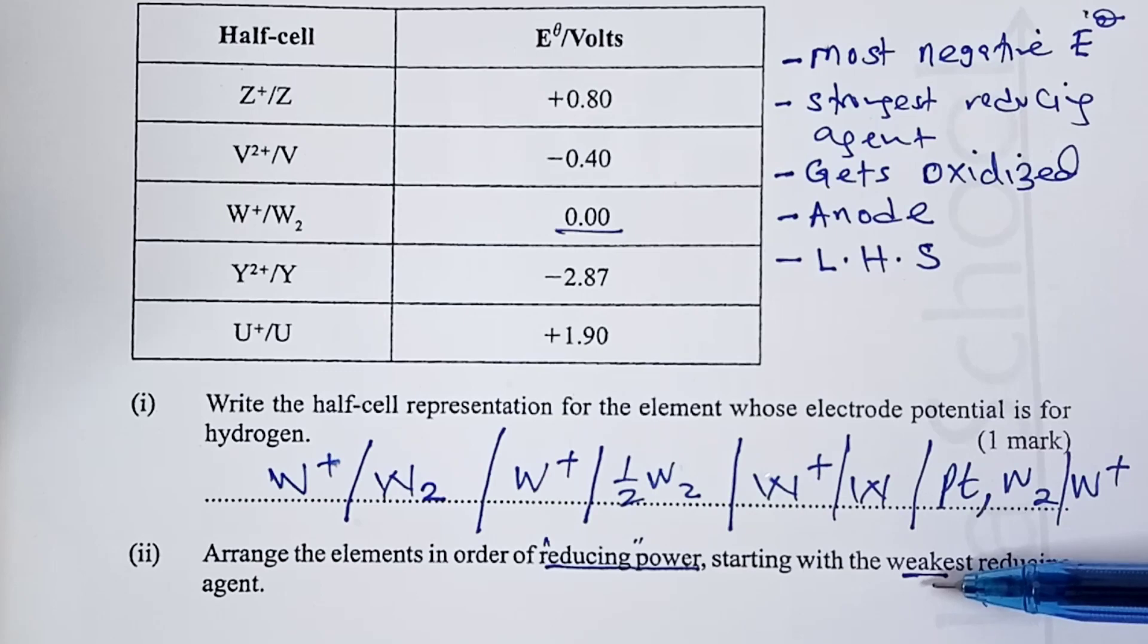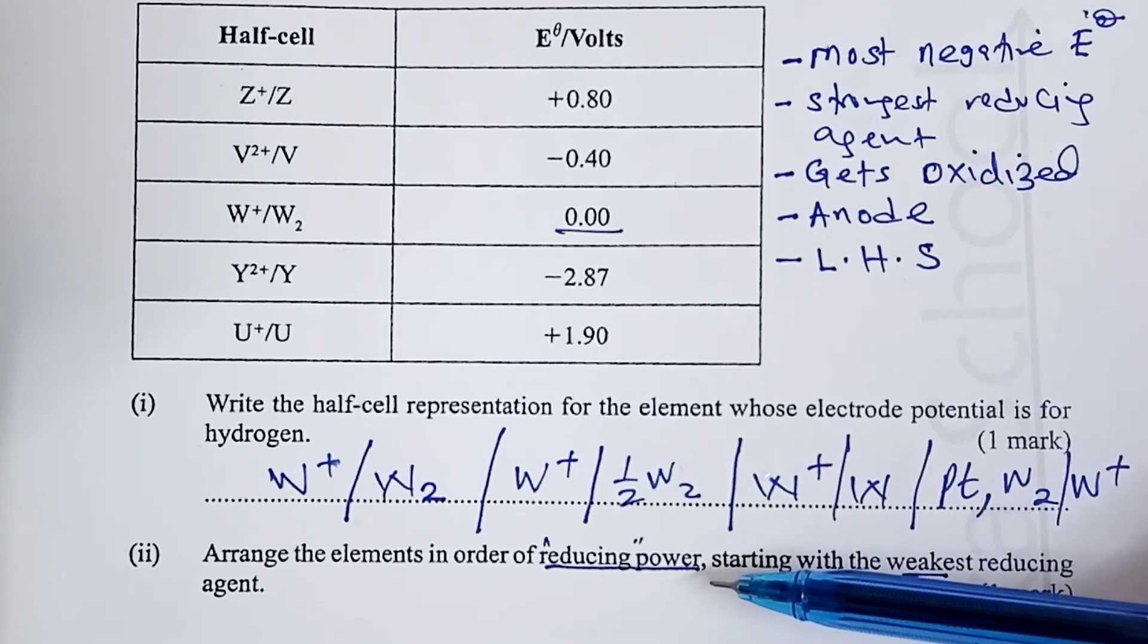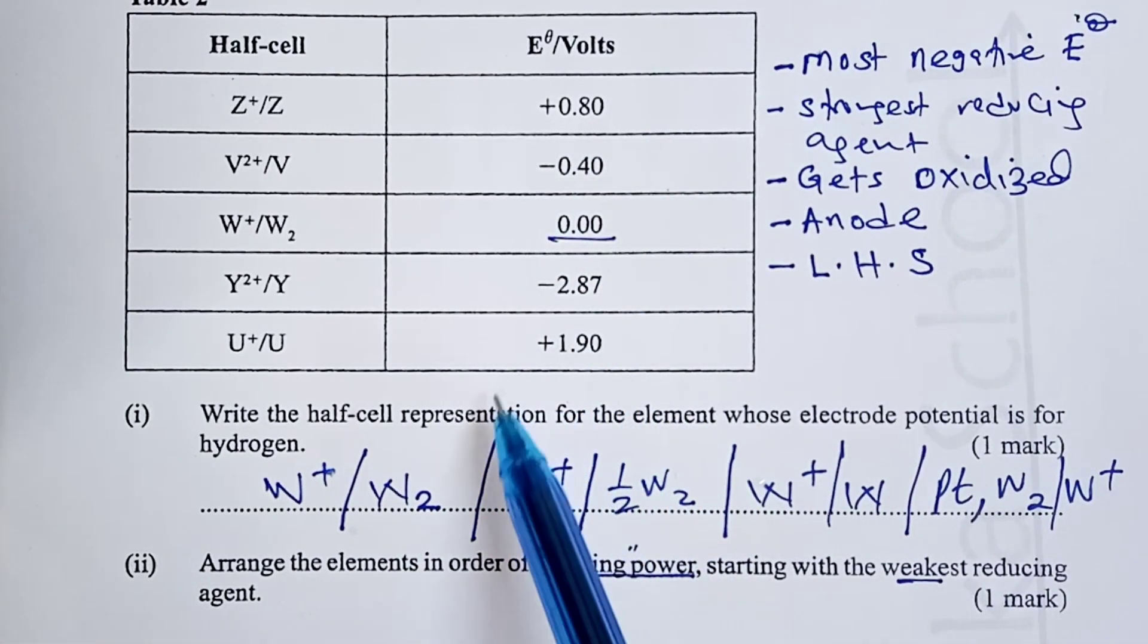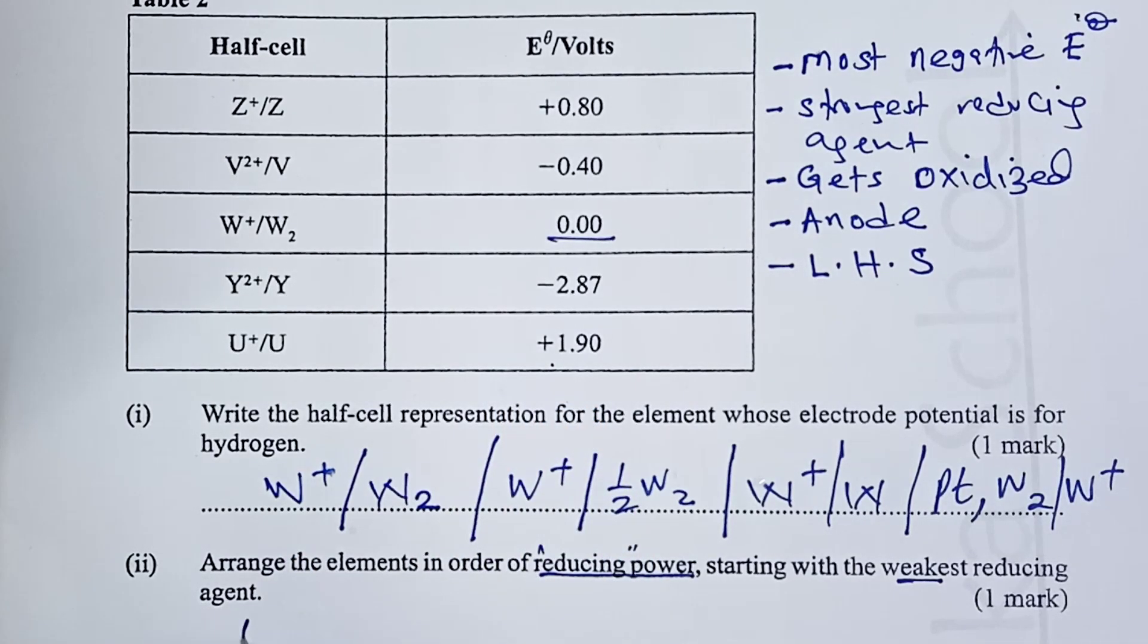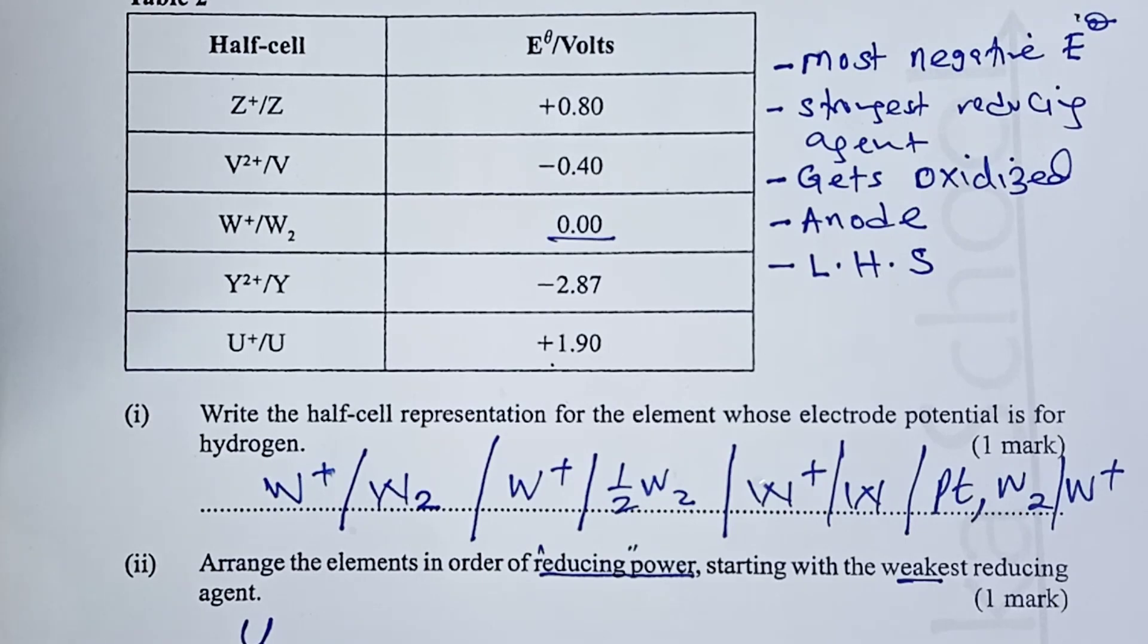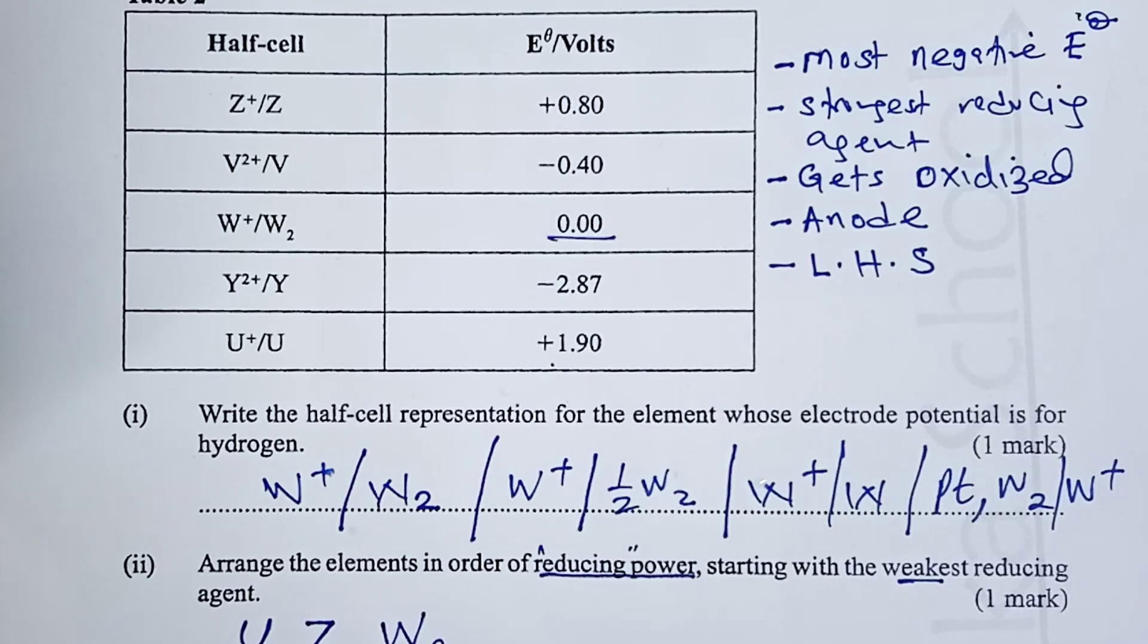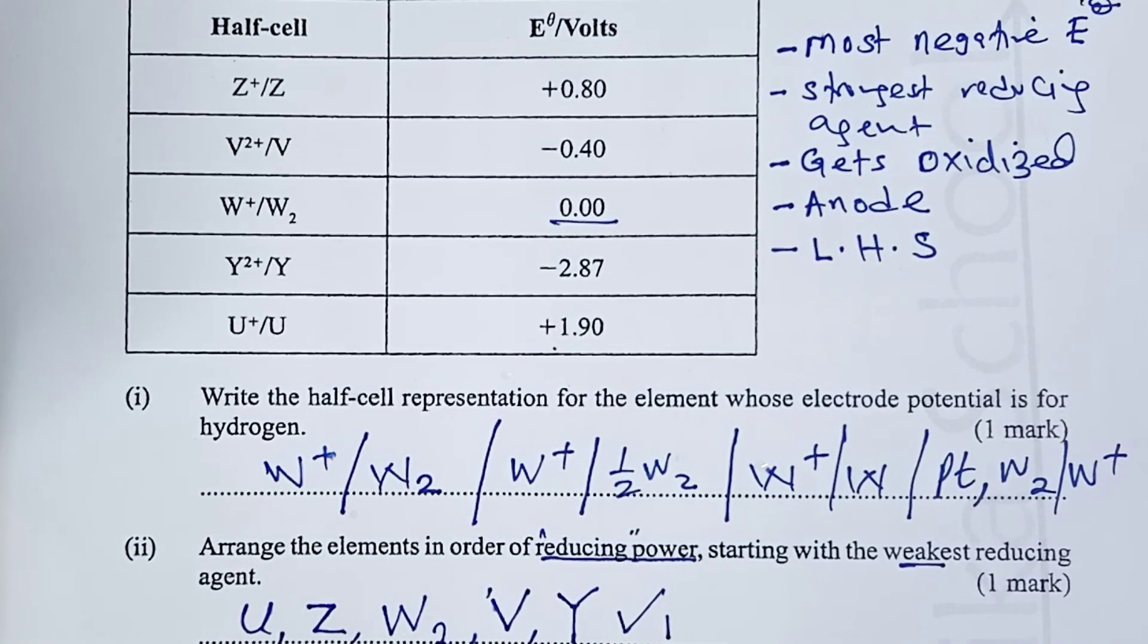You check your values. The most positive is actually U. U is followed by Z. Z is followed by W2, or you just write W with no 2. Then, we have V next. And, the element with the most negative, the strongest reducing agent is actually Y. So, the order U, Z, W, V, Y is good enough for that one mark.